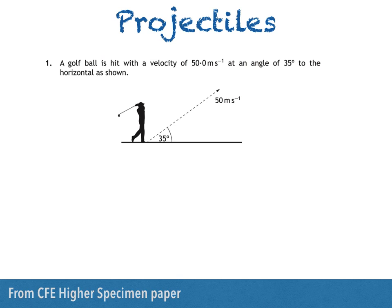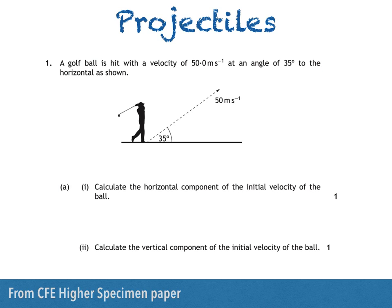A golf ball is hit with a velocity of 50 meters per second at an angle of 35 degrees to the horizontal as shown. Part 1 asks us to calculate the horizontal component of the initial velocity of the ball. Part 2 asks us to calculate the vertical component of the initial velocity of the ball.